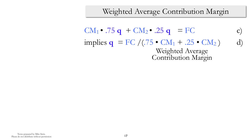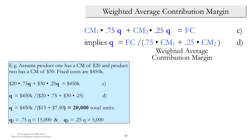And this is what we call the weighted average contribution margin. What does that mean? It means that it's the average of the two contribution margins, but where the weights represent the sales mixes of the two products. So let's see this in terms of our example.